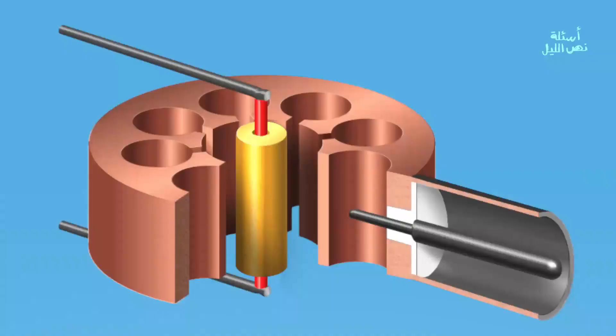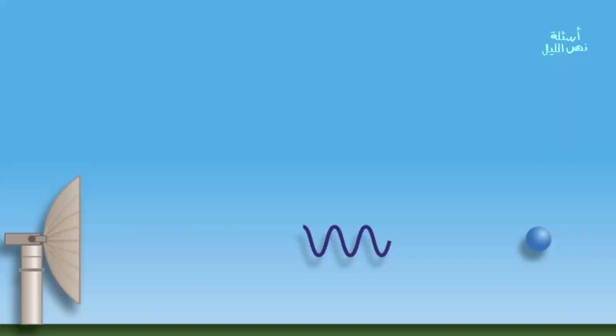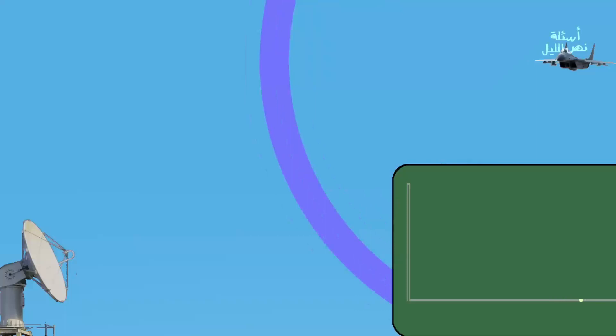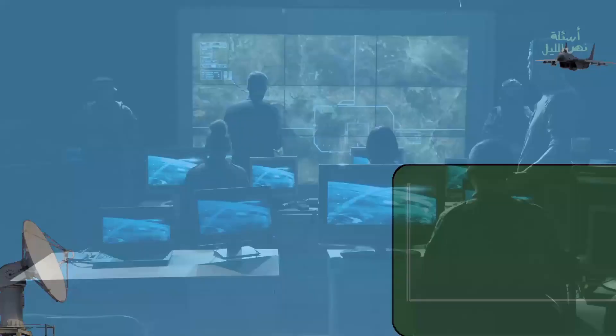The basic idea of radar is to send out a signal, which then bounces back when it hits an object. The time taken for the signal to bounce back is measured, and this provides information on the distance, speed, and direction of the object. Radar can also determine the shape and size of the object, which is essential in identifying whether it is a plane or a ship.